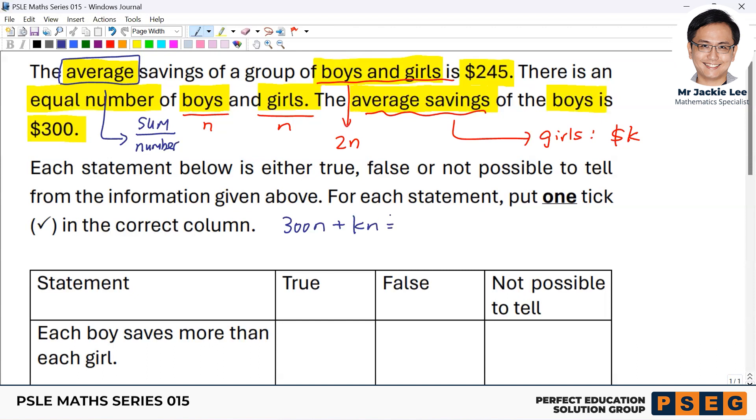These two add together should be the total sum for boys and girls together. Which will be 245 times 2n. So far so good.